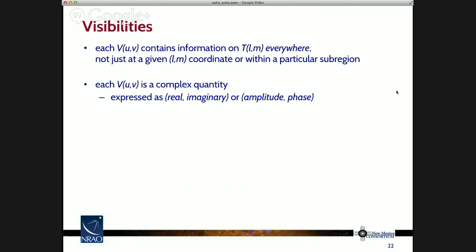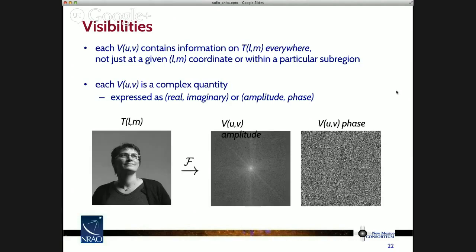Another word about visibilities. Each visibility at some UV point contains information on the sky brightness everywhere — because of the sinusoidal nature of the phase term, each point in the UV plane has information on sky brightness across the entire domain. Also, each visibility is a complex quantity, expressed as either a real and imaginary part, or as an amplitude and a phase. Here's an example of a Fourier transform of an image — an astronomer represented as sky brightness T(l,m). Fourier transforming that image gives visibility information at a whole bunch of UV points, with amplitude and phase.